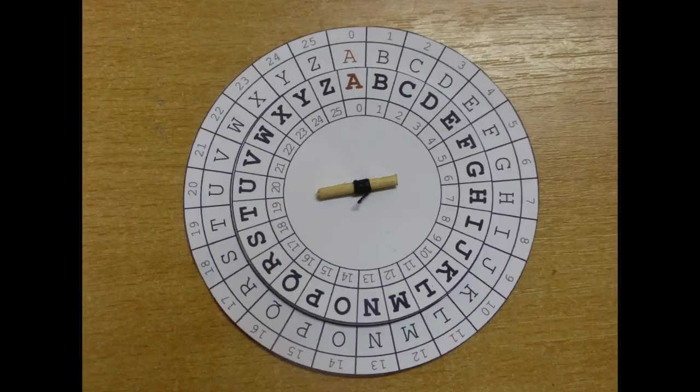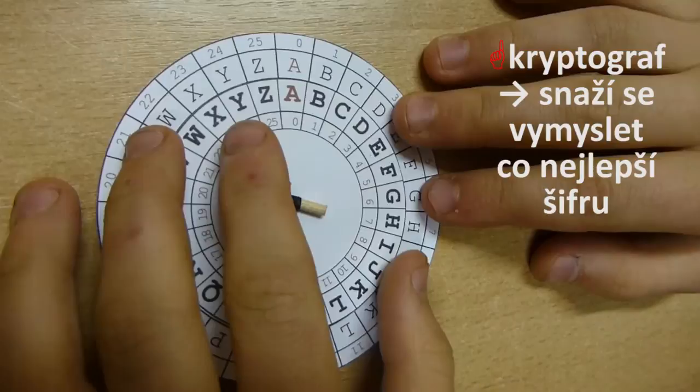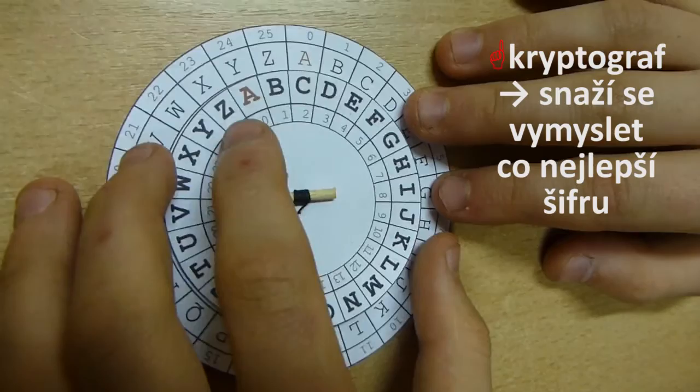Všimněte si, že při šifrování nepoužíváme znaky s diakritikou, tedy s háčky a čárkami, ani písmeno ch. V abecedě nám tedy zbývá 26 znaků. Kdyby byly kotouče natočené stejnými znaky na sebe, zpráva by vlastně nebyla zašifrovaná a šla by normálně přečíst. Kryptograf, tedy ten, kdo zprávu zašifroval, musel pootočit šifrový kotouč o 1 až 25 znaků.